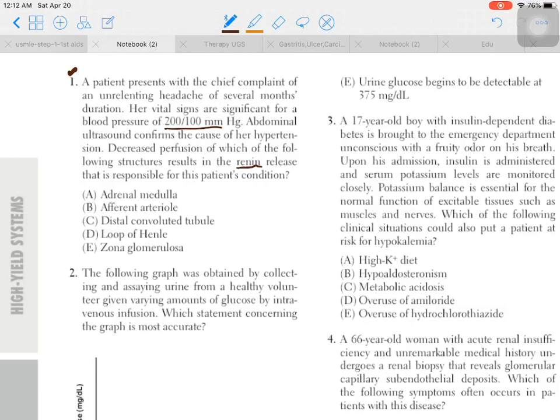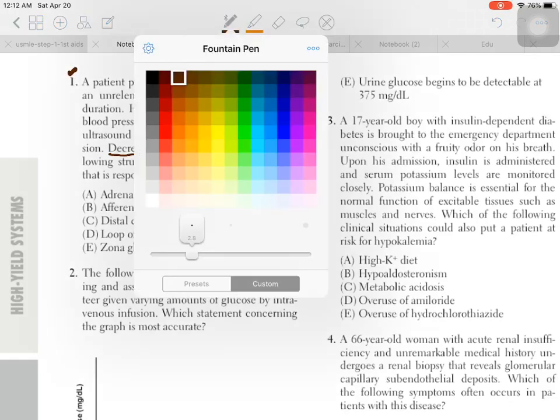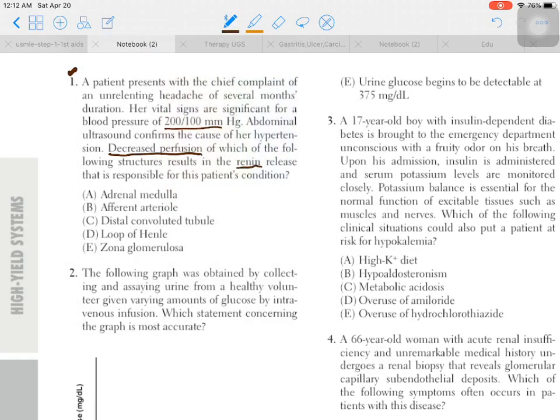We know that the hypertension and increased blood pressure is due to excessive release of renin. They clarify that decreased perfusion is the key point. Which structures, if they have less blood flow, lead to the release of renin? Adrenal medulla - if less blood flow to adrenal medulla, it undergoes necrosis and infarction.